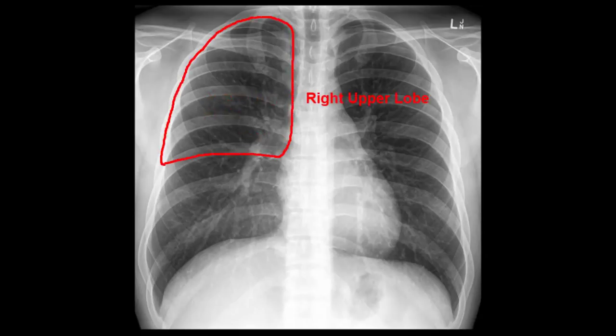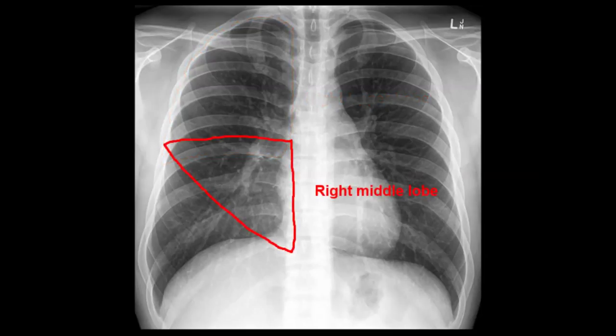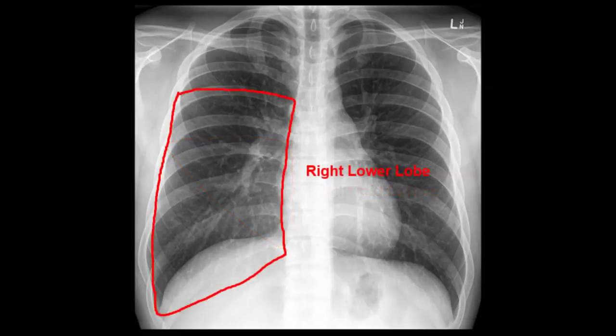Now on to the lung fields, and we'll start with the lobes. I've outlined roughly where each lobe is located on the film: first the right upper lobe, then the right middle lobe, which touches the right heart border, and the right lower lobe, which touches the right hemidiaphragm. Hopefully you notice that there is some overlap between lobes, particularly between the lower lobe and the other two.